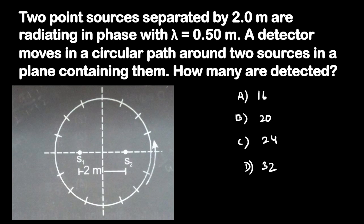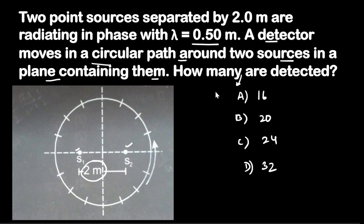Hello friends! This is a very beautiful question of wave optics. Two point sources separated by a distance of 2 meters are radiating in phase with lambda equal to 0.50 meters. One source is S1 and one source is S2, these two are 2 meters apart. They have radiation of 0.50 meter wavelength. A detector moves in a circular path around the two sources in a plane containing them. How many maxima are detected?